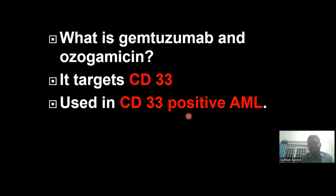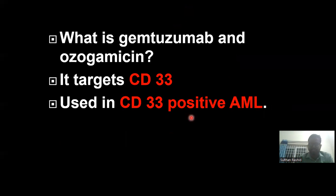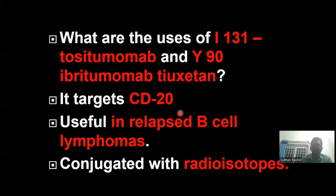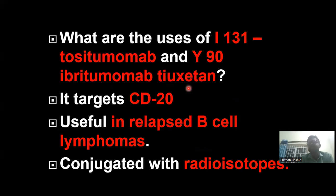Now comes gemtuzumab ozogamicin. They target CD33 and are used in CD33-positive AML — acute myeloid leukemia. If there is CD33-positive AML, we can give gemtuzumab ozogamicin because it targets CD33.